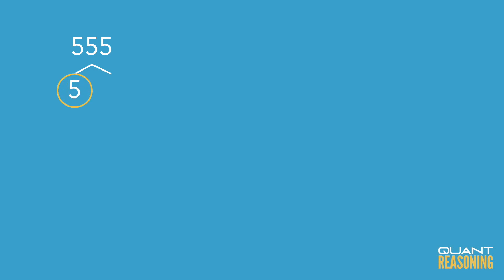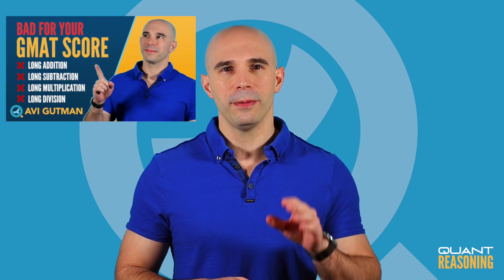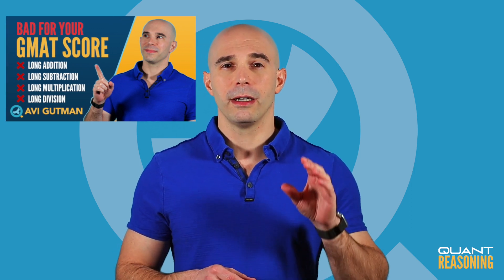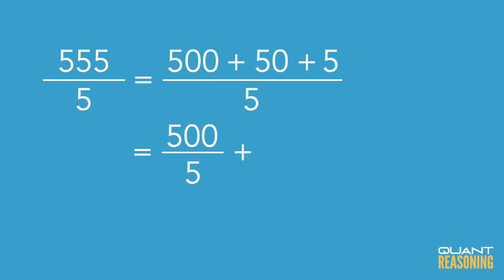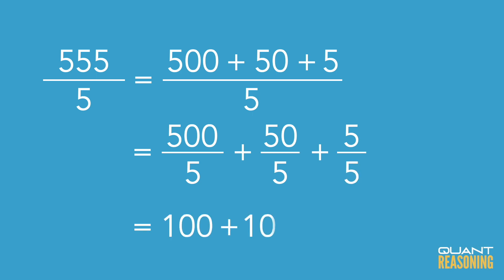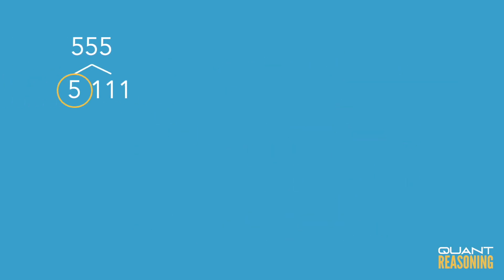What does it mean to pull a 5 out? It means to divide 555 by 5. I'll estimate and adjust by thinking of it as 500 plus 50 plus 5, and divide each of those separately by 5 — I get 110 and 1, or 111. So the beginning of our prime factorization tree for 555 has a 5 and 111. I'm going to circle the 5 because it's a prime number, so I'm done with that side of the tree.